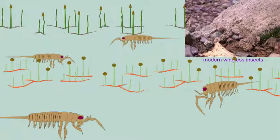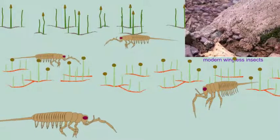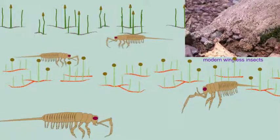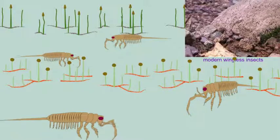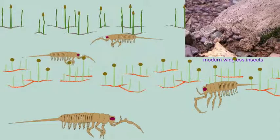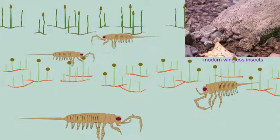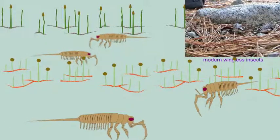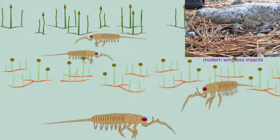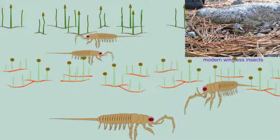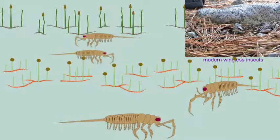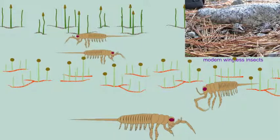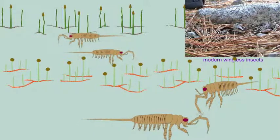Insects are not known throughout the fossil record. In fact, none are known anywhere on Earth prior to the Devonian period. The most primitive insects alive today are wingless insects, and these are the first insects known from the Devonian period.